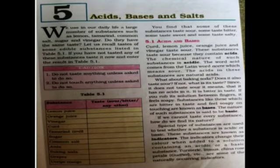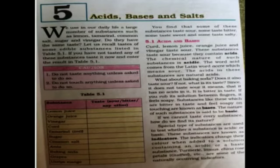Chapter 5, Acid, Bases and Salt. Your very first point is Acids. Acids are sour in taste and acid turns blue litmus red. Bases are bitter in taste and soapy on touching, and base turns red litmus blue. So the difference: acids are sour in taste while bases are bitter in taste; acid turns blue litmus red and base turns red litmus blue.